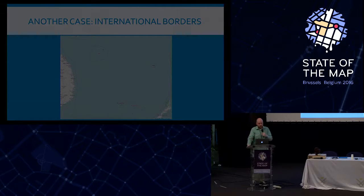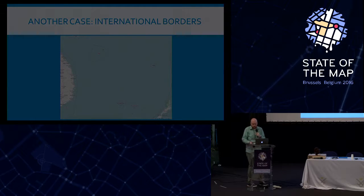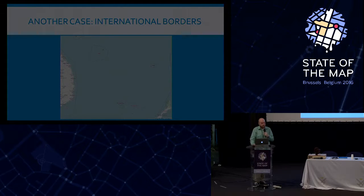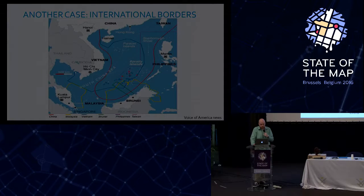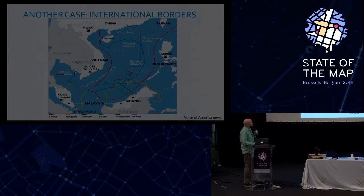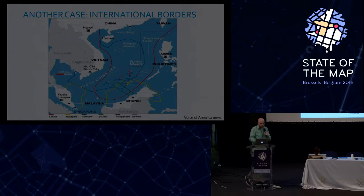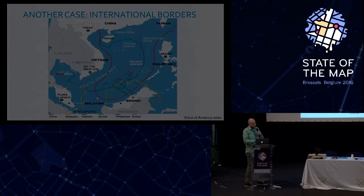Another common case beyond naming is border situations. Looking at the South China Sea and the Spratly Islands, it's obviously an area of strong contention between many countries. This image from a news website shows the different claims, including China's nine-dash line, which was recently invalidated by an international court, plus other claims the court didn't even address.